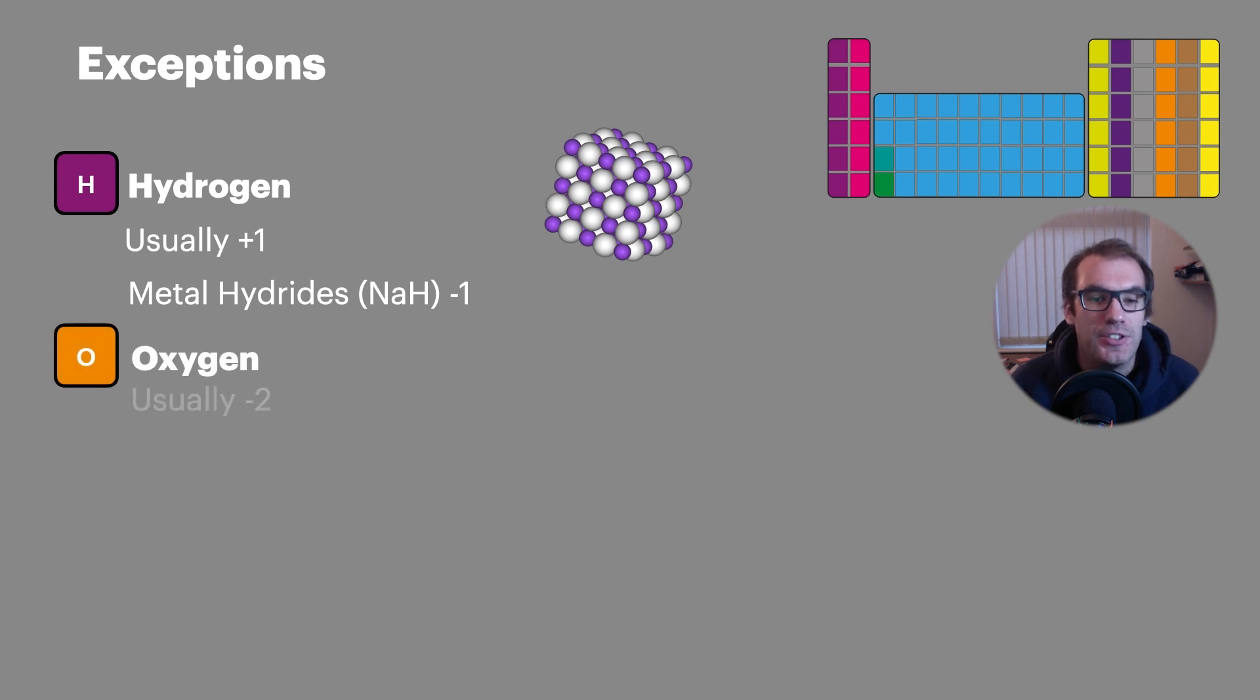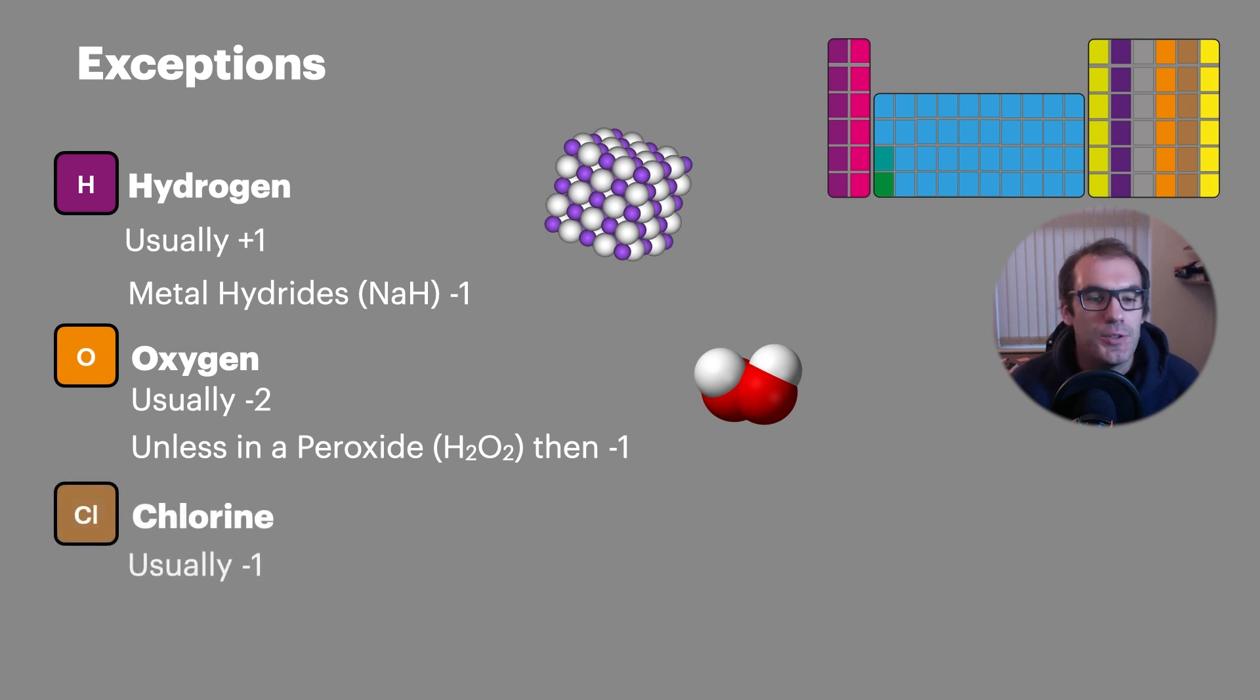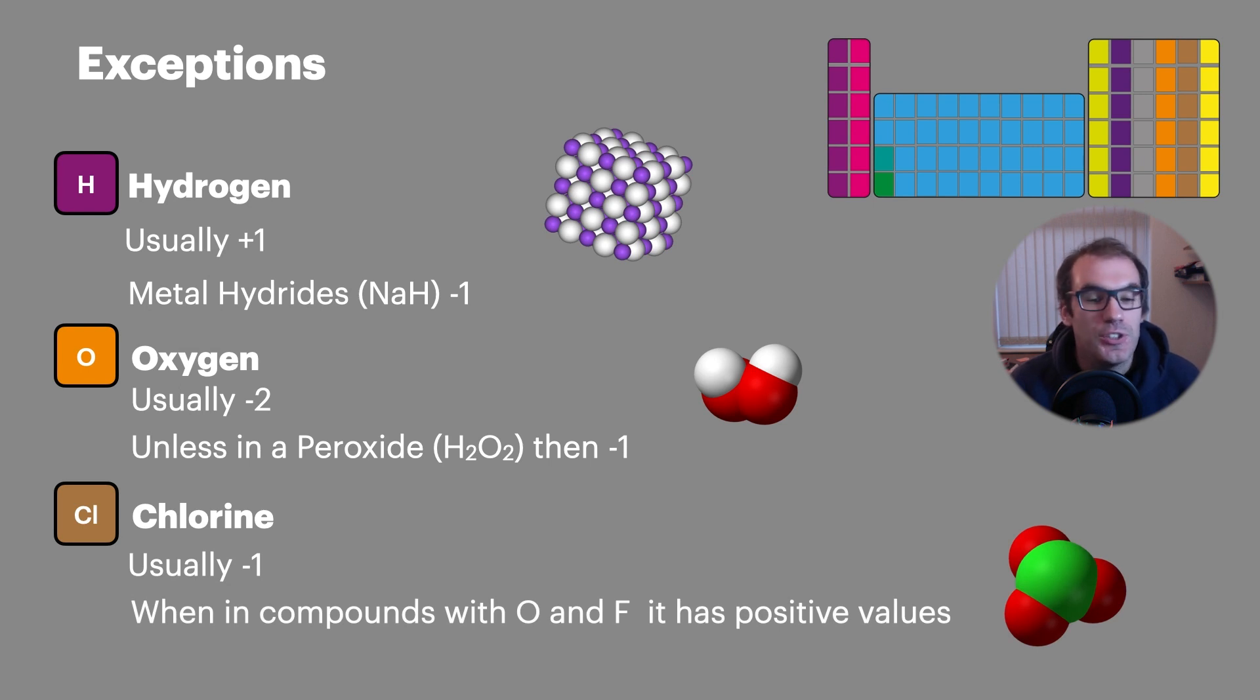Oxygen, which is usually minus two, will become minus one in a peroxide such as hydrogen peroxide. And finally, chlorine, which is usually minus one, will take on a positive value in compounds with oxygen and fluorine such as the chlorate ion.